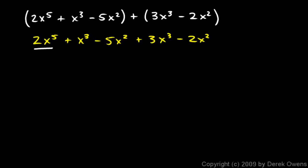So 2x⁵ will be part of my answer. And then I have an x³ and a 3x³. And I use these little underlining methods here just to keep track of which ones I've included in my answer. And I have the x³ and the 3x³ and that gives me a 4x³. And then I can see that I have this -5x² and the -2x². And that will give me a -7x². And that's my answer. 2x⁵ + 4x³ - 7x².